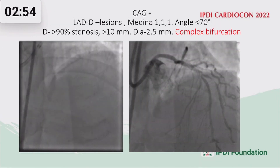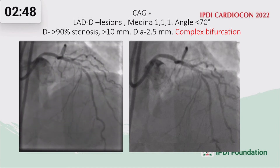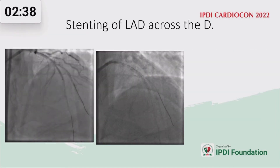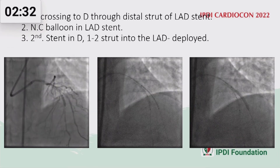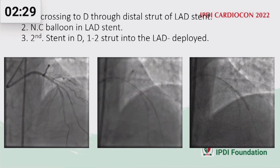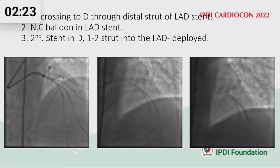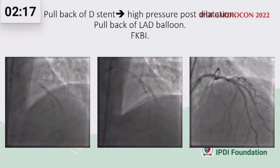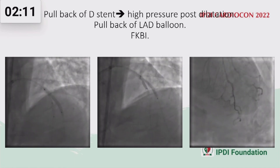This is an example of TAP from the LAD to diagonal. All steps are followed here. Predilatation is usually done in sequence — LAD and then diagonal. Then stenting the LAD across the diagonal. Then recross the diagonal through the LAD stent. NC balloon predilatation of the LAD stent, and second stent in the diagonal deployed at nominal pressure. Pullback of the diagonal stent balloon, final kissing balloon, and final POT.